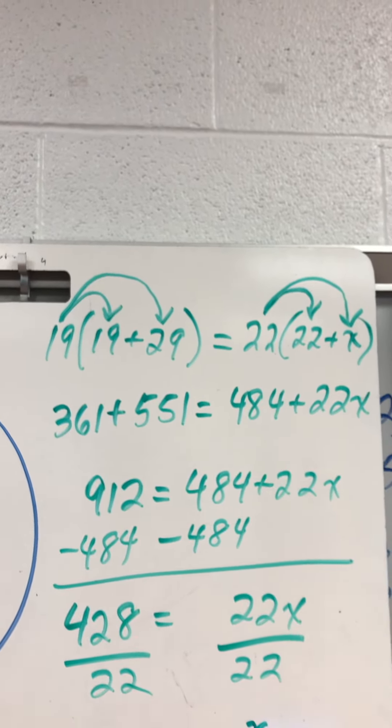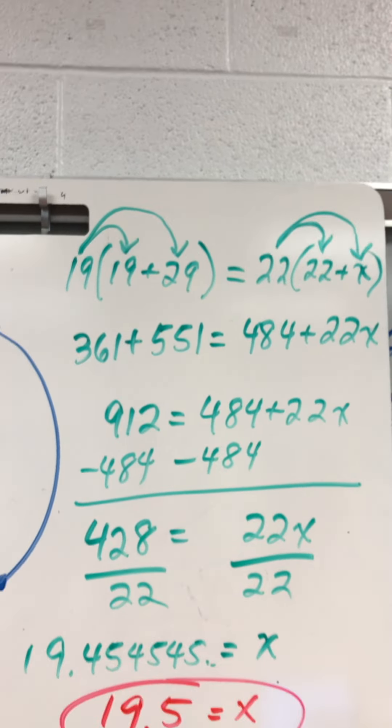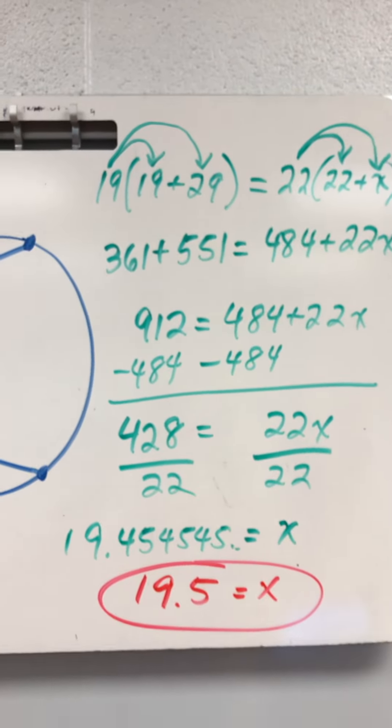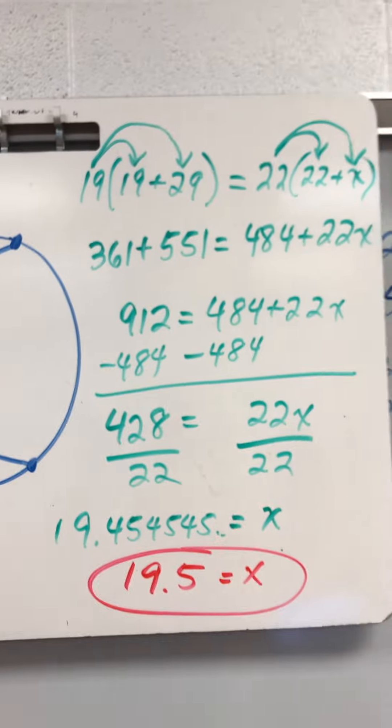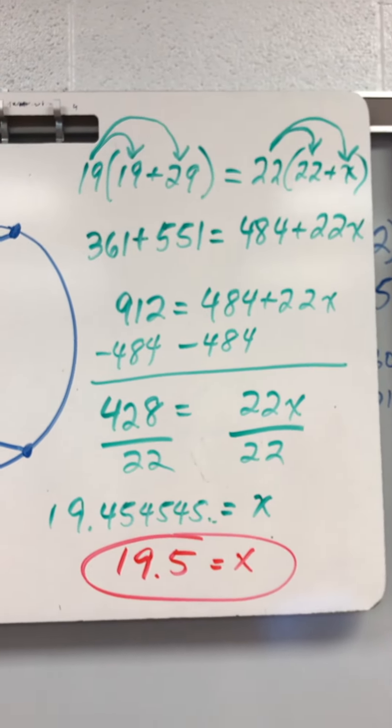You get 428 equals 22X. Divide by 22. You get 19.45 repeating, 19.5 rounded to the nearest tenth.